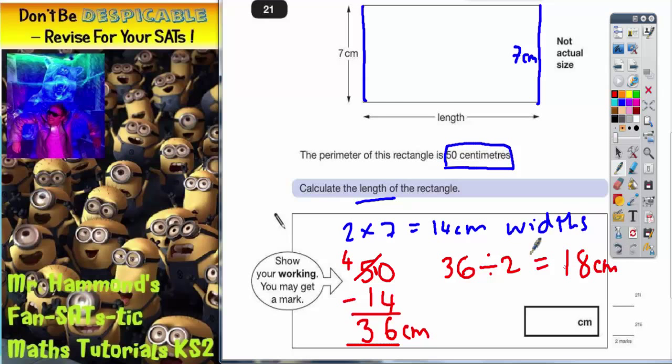So 36 divided by 2 is 18. Half of 36 is 18. So we've got 18 there for that length, 18 there for that length. And that should be the answer. So 18 is the answer that we need to write in.